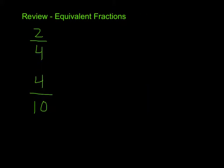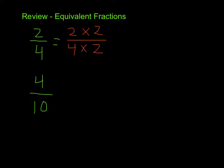On our next slide, we're going to review making equivalent fractions. I have the fraction 2 fourths, and I can either multiply or divide to create an equivalent fraction. In this case I am going to multiply. I can choose any number as long as I multiply both the numerator and the denominator by the same thing — I'm going to pick 2. So 2 times 2 is 4, and 4 times 2 is 8.